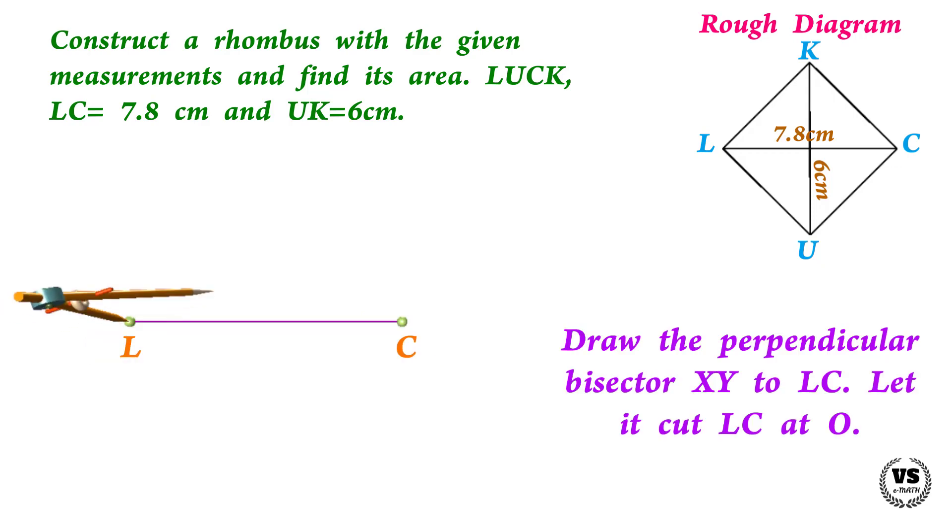We know that the diagonals of a rhombus bisect each other at right angles, so draw perpendicular bisector XY to LC.